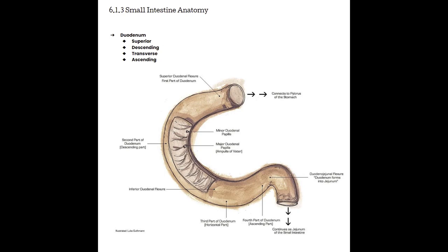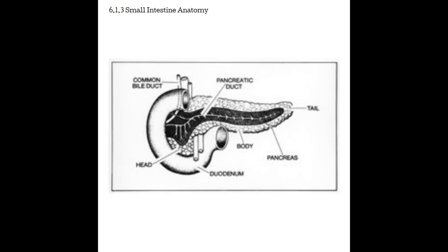The duodenum has four sections: the superior section, which curves into the descending section, then travels medially through the transverse section, and curves up into the ascending section before going into the jejunum. For ultrasound, the duodenum is quite significant — it surrounds a lot of midline anatomy and is home to the ampulla of Vater, where bile and pancreatic enzymes enter the duodenum. Recognizing where the duodenum lies is important because when air gets into the duodenum, it can obscure these structures.